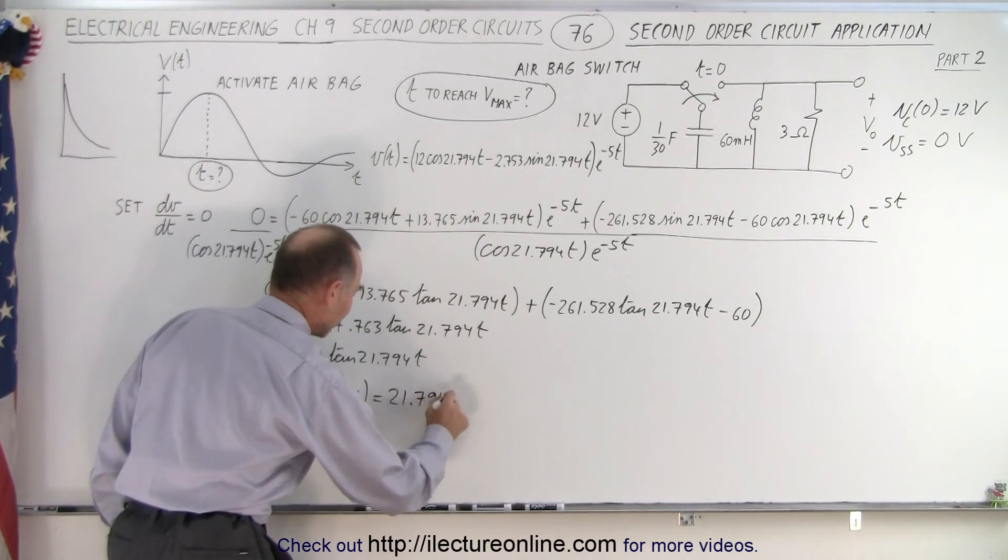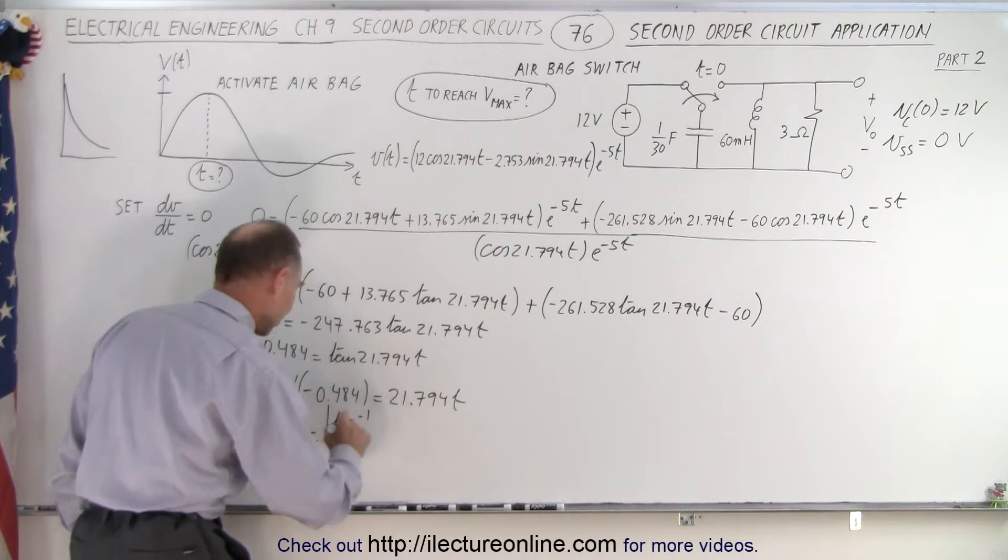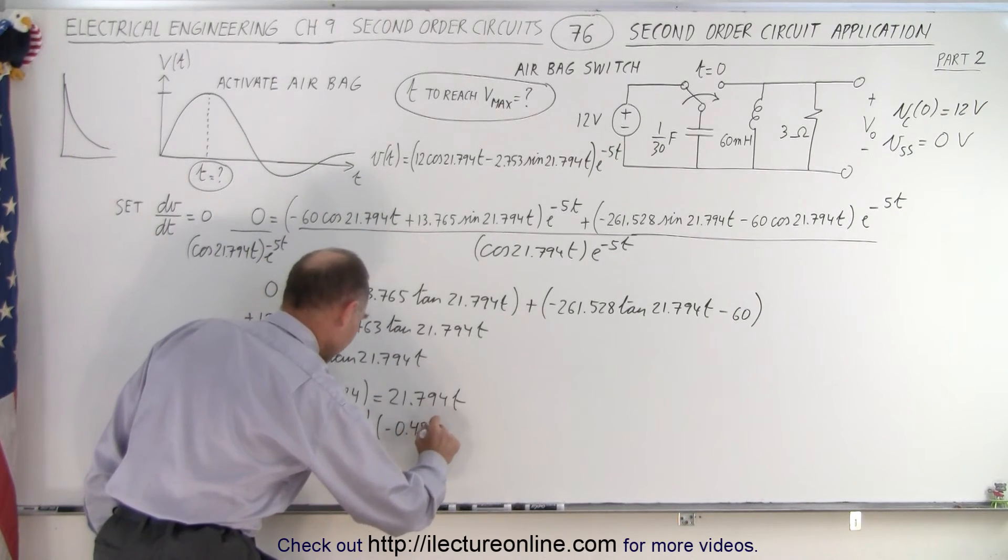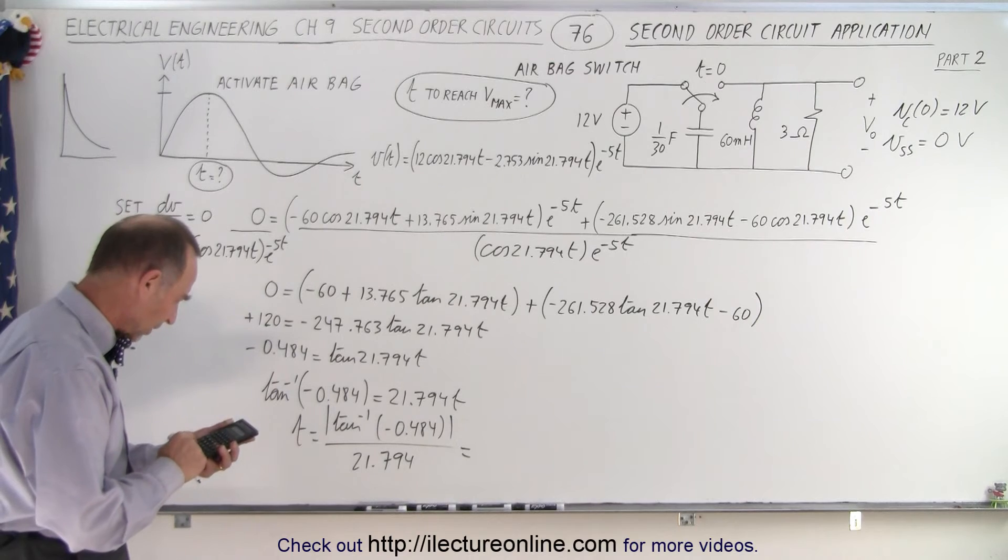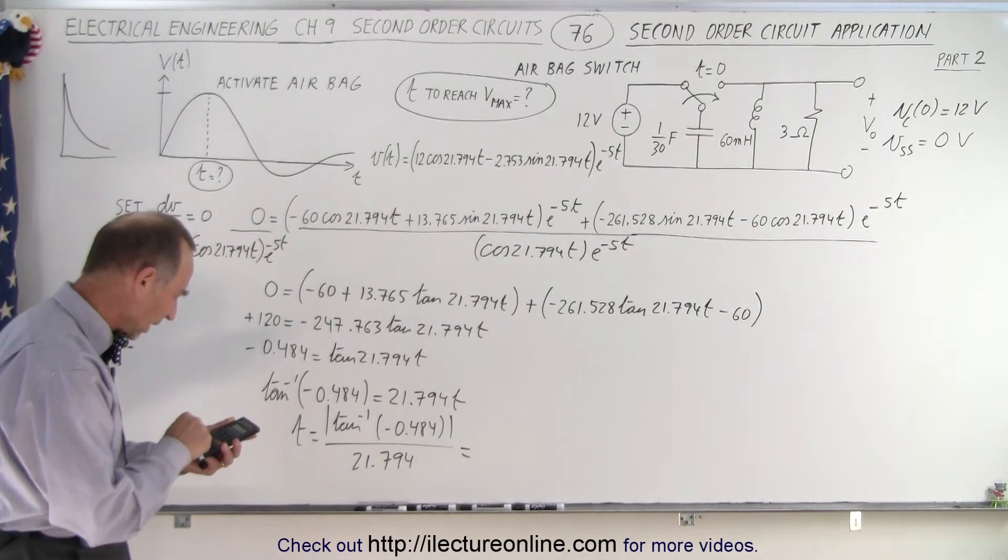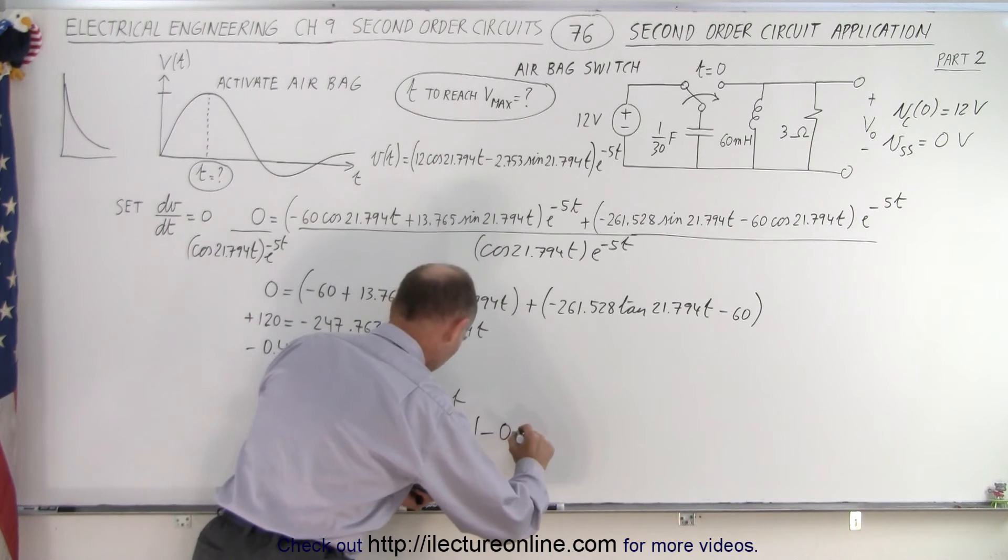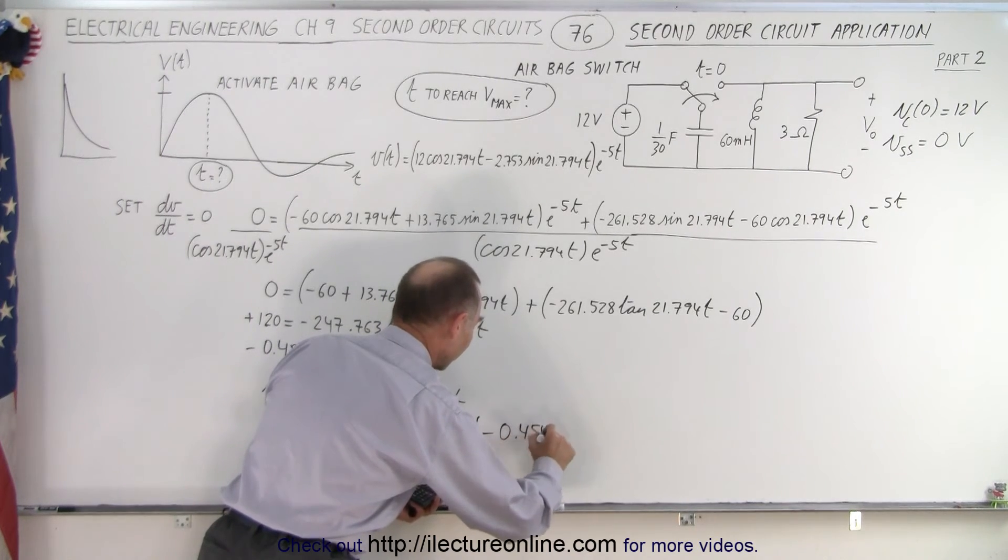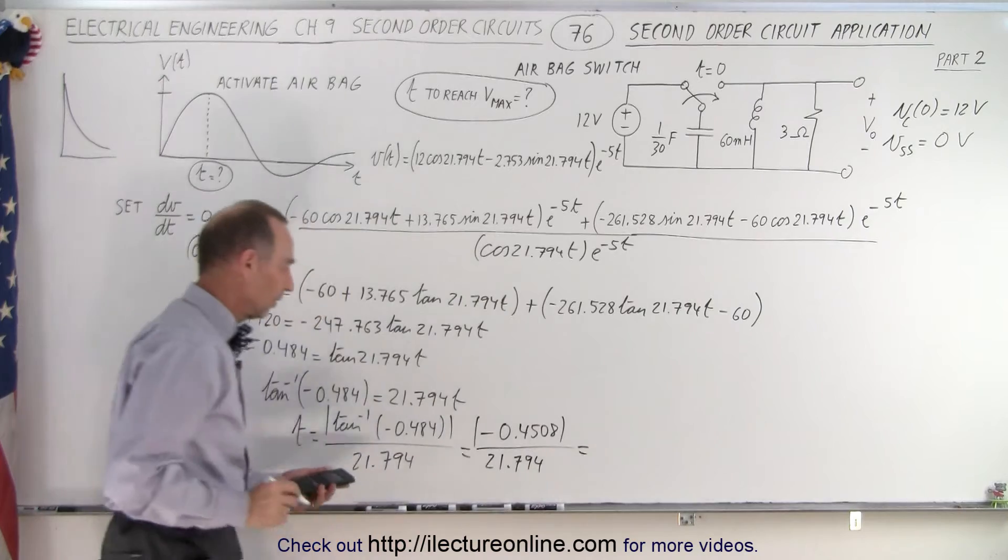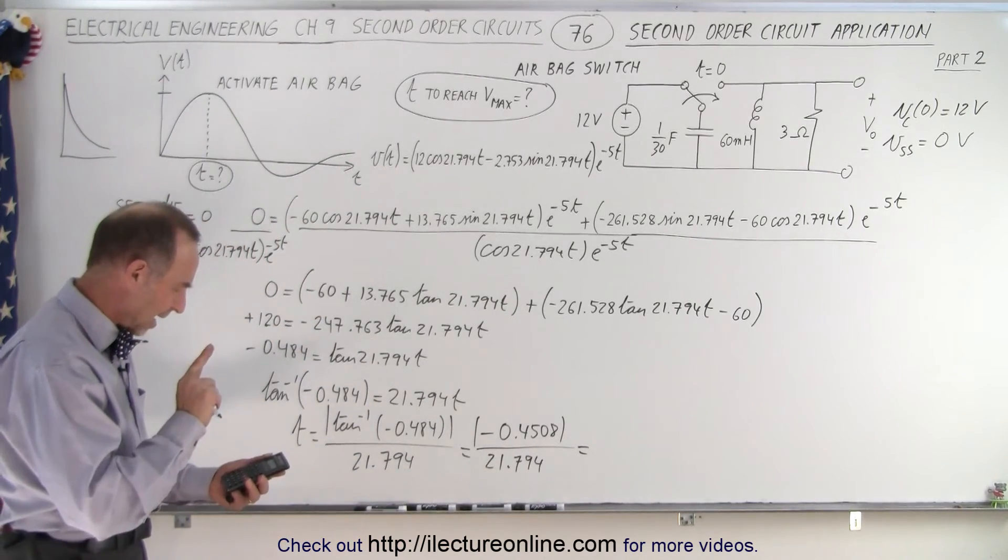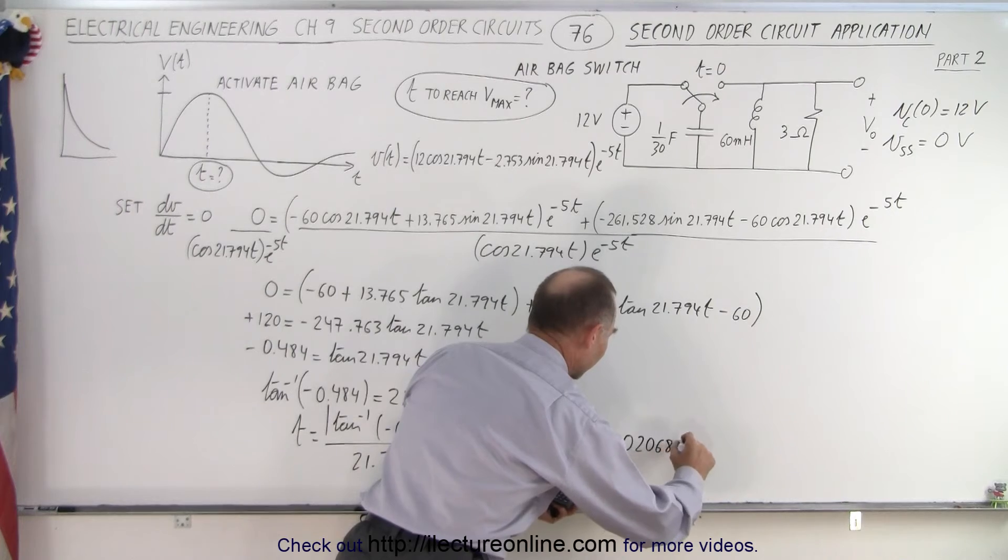Or we can say that t is equal to the inverse tangent, and of course we want to take the absolute value of that in case we get a negative value, all divided by 21.794. All right, let's see what that's equal to. So we end up with 0.484 negative, take the inverse tangent, we get a minus, so this is equal to minus, take the absolute value, 0.4508, divided by 21.794. And that gives us 0.02068 seconds.